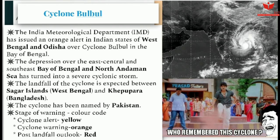The next issue is Cyclone Bulbul. The Indian Meteorological Department (IMD) issued an orange alert for West Bengal and Odisha over Cyclone Bulbul in the Bay of Bengal. The depression over the east-central and southeast Bay of Bengal and north Andaman Sea turned into a severe cyclonic storm. The expected landfall is between Sagar Islands, West Bengal, and Khepupara, Bangladesh — remember these two points. The cyclone was named by Pakistan. Color code yellow means cyclone alert; orange means cyclone warning; and red means post-landfall outlook. Also mention in the comment box where the headquarters of IMD is and when it was established.